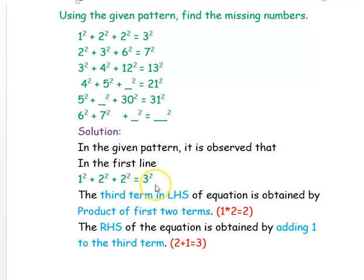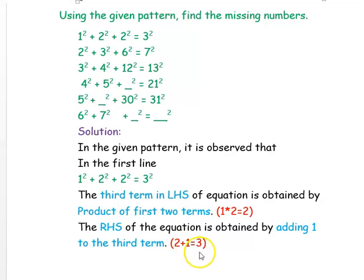The right-hand side of the equation is obtained by adding 1 to the third term. So the third term is 2, and 1 is added to it: 2 + 1 = 3. That is the right-hand side of the equation. This is what we observe in the first line of the given question.